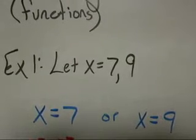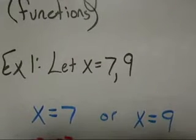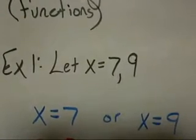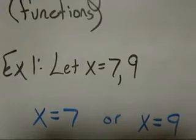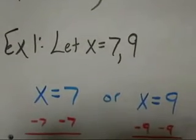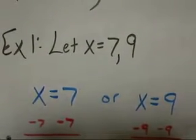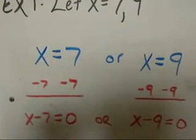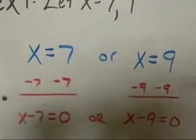We're going to use the zero product property, but going backward. So I need to turn that 7 into a 0 and the 9 into a 0. Well, to get rid of positive numbers, we subtract. So on both equations, subtract the value from each side, which will give us x minus 7 is equal to 0 or x minus 9 is equal to 0.